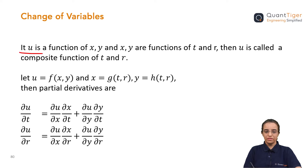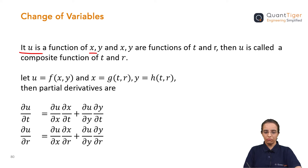Here, if u is a function of x and y — if you remember in total differentiation, u is a function of x and y and x and y are functions of t. We used to find the differentiation of u with respect to t, which was the indirectly connected variable. Here, similarly, u is a function of x and y, but x and y are functions of not only one variable — x and y are functions of t and r, two more variables. Then we call it a composite function of t and r.